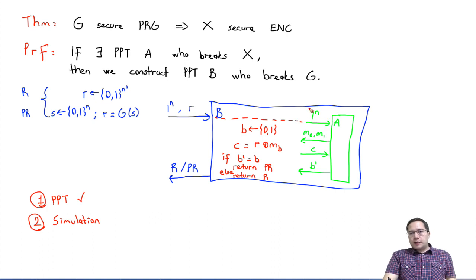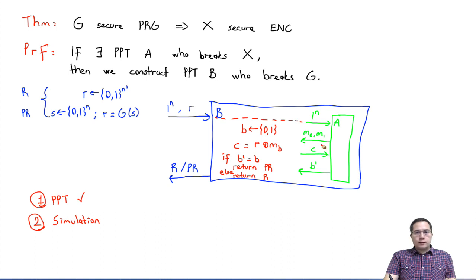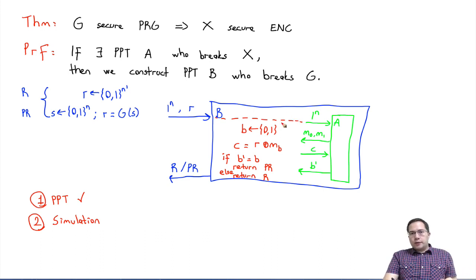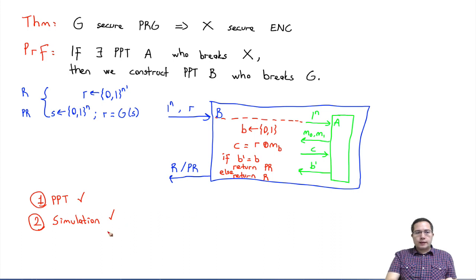The other thing we needed to argue is our simulation. Remember, A is expecting the security parameter — we are giving him one. A is expecting one of the messages XOR'd with some value — which is what we are giving him. So our simulation of the challenger is done; we are indistinguishable from a real challenger of the encryption game as far as A is concerned.